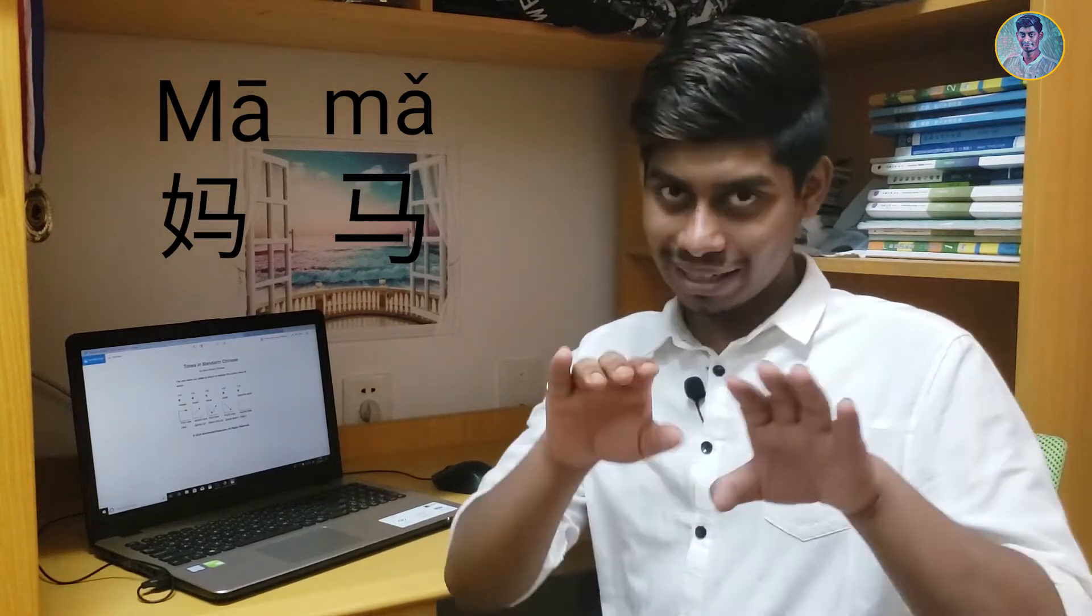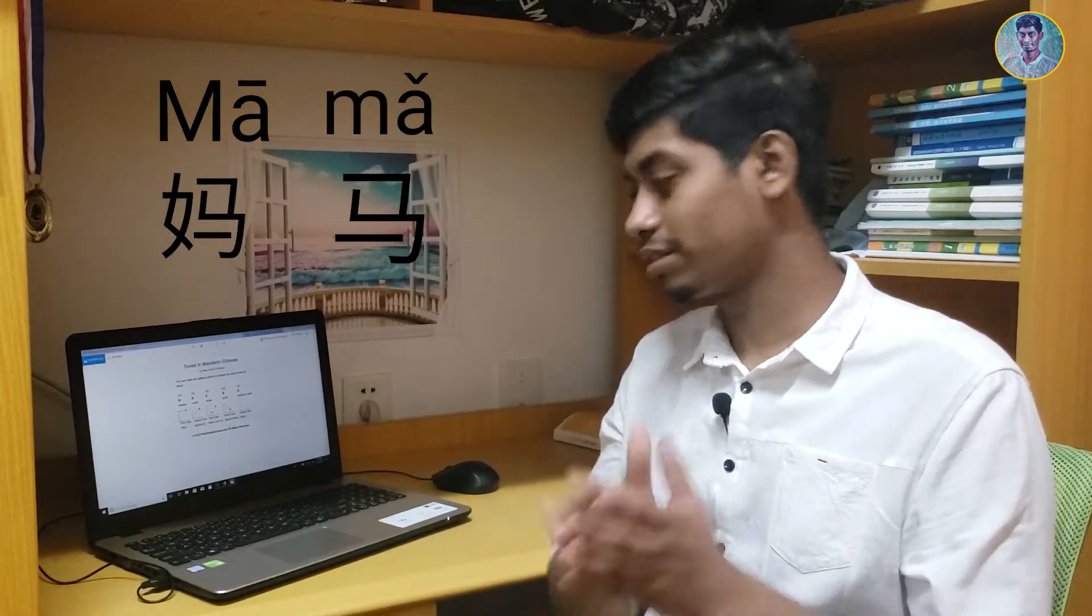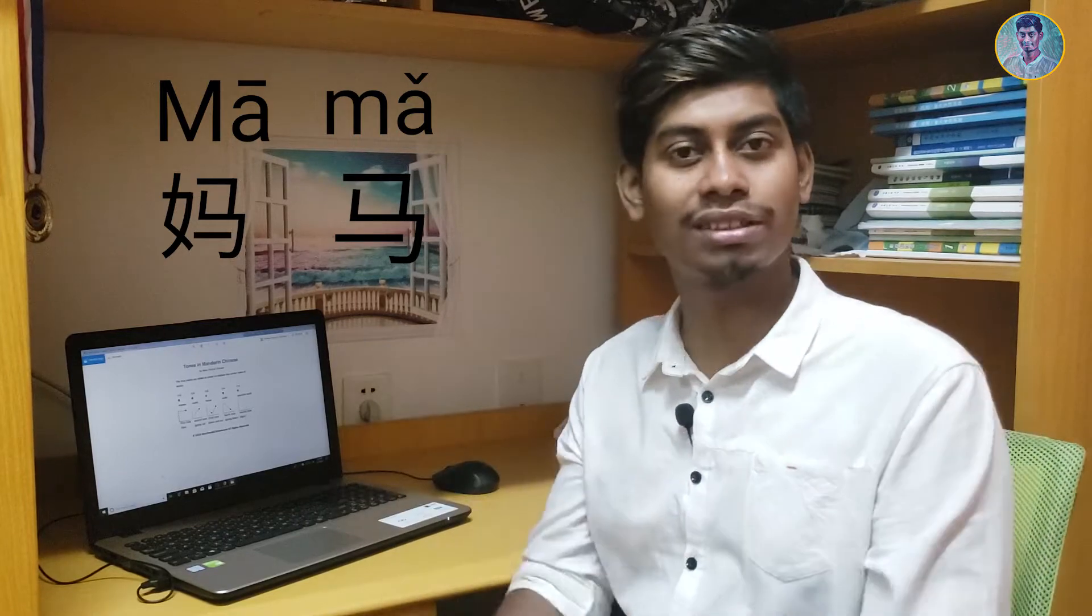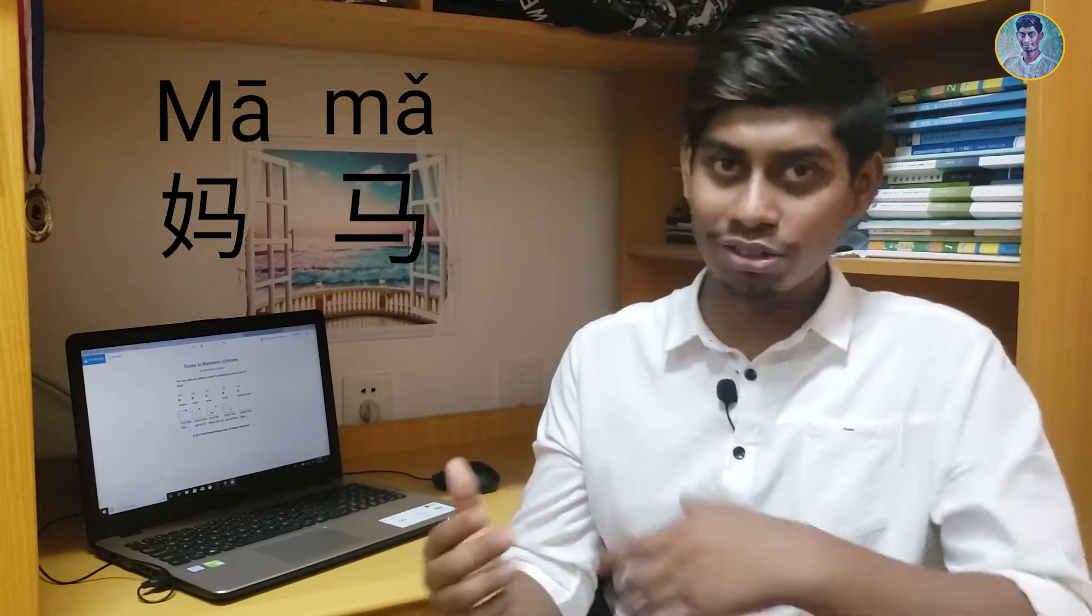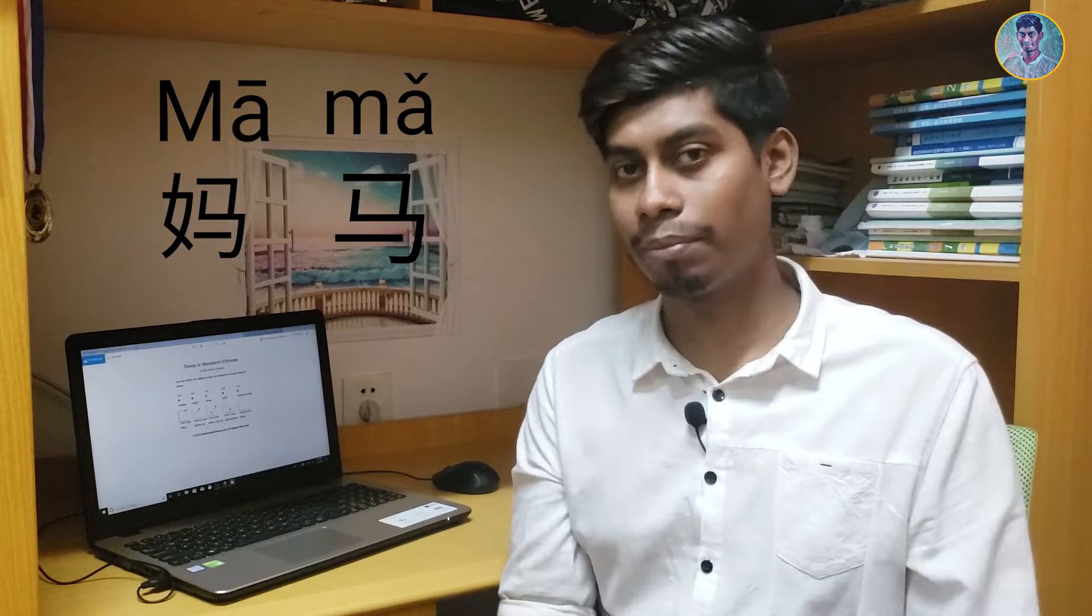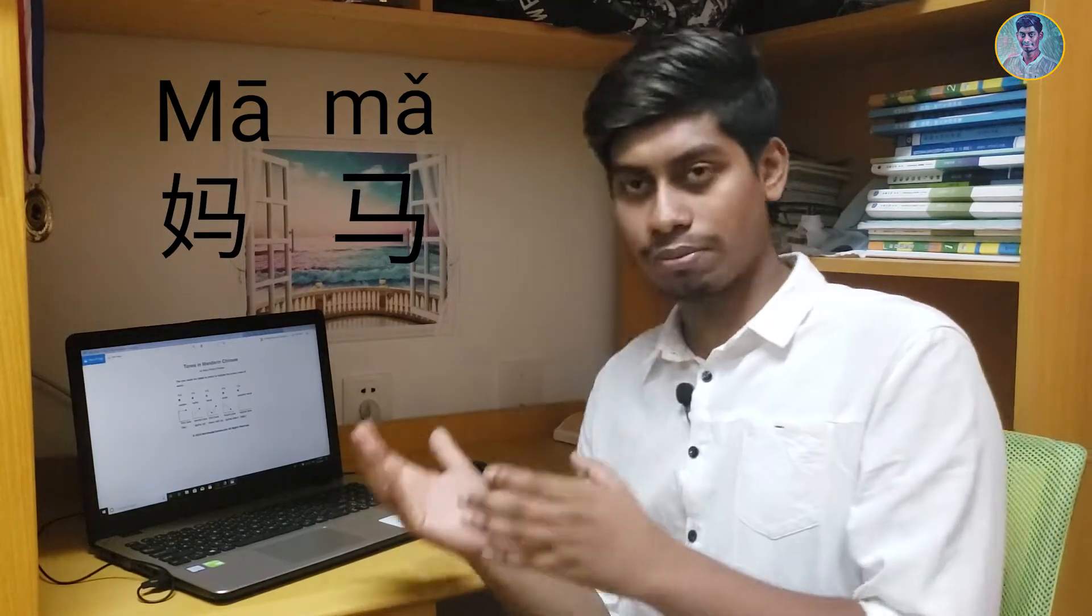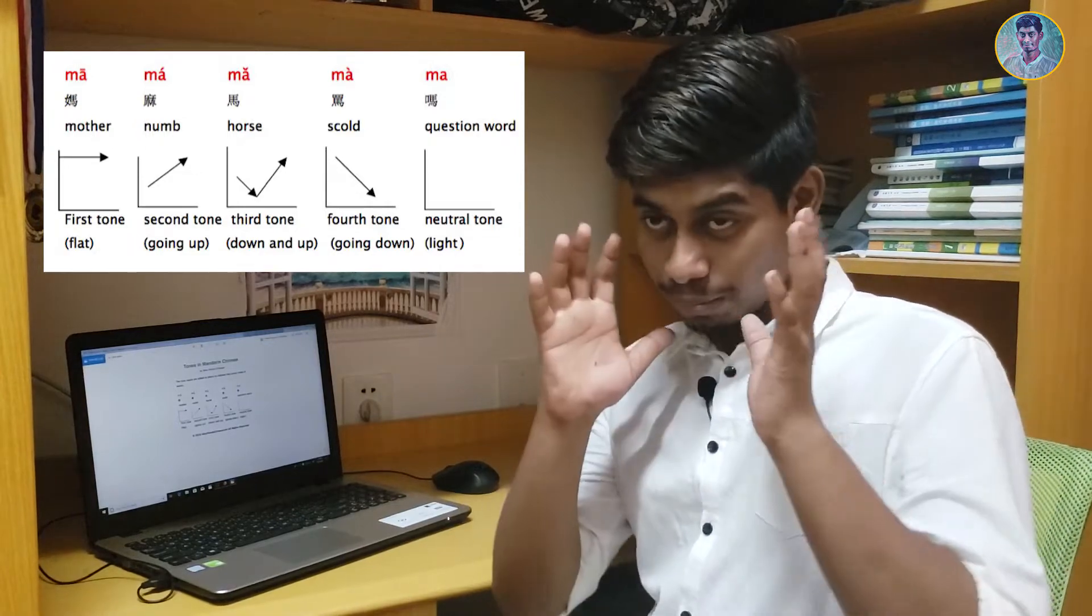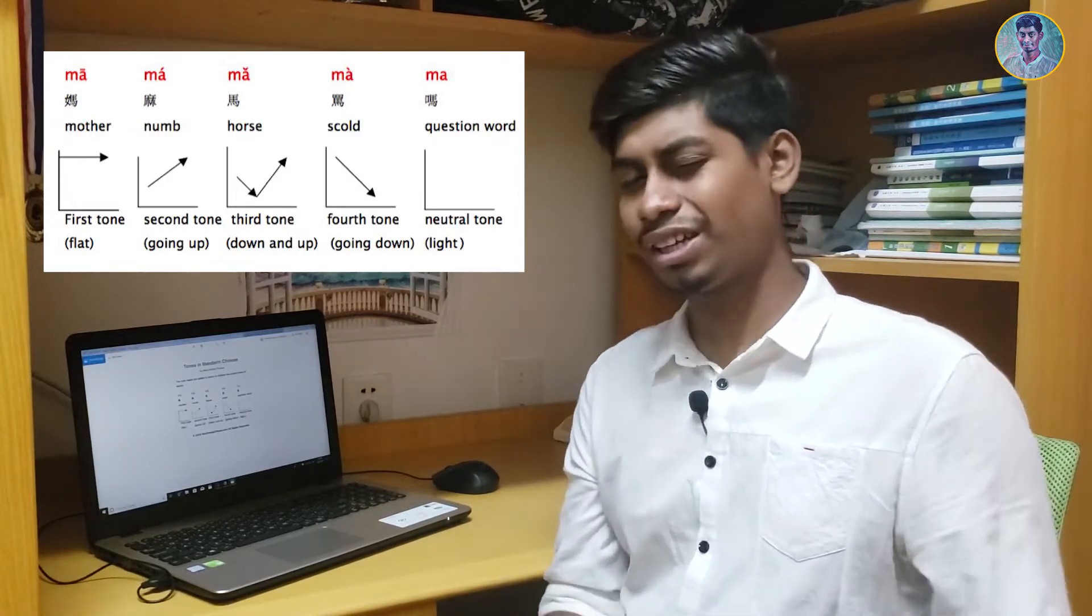So the first tone is like this, second tone is like that. These are the four main tones, but there's also a fifth one called the neutral tone. Let me explain each tone - the neutral tone doesn't have an effect, but the other four tones are most important in Chinese language.